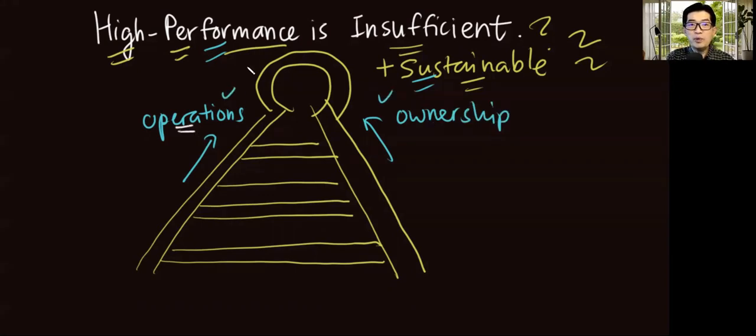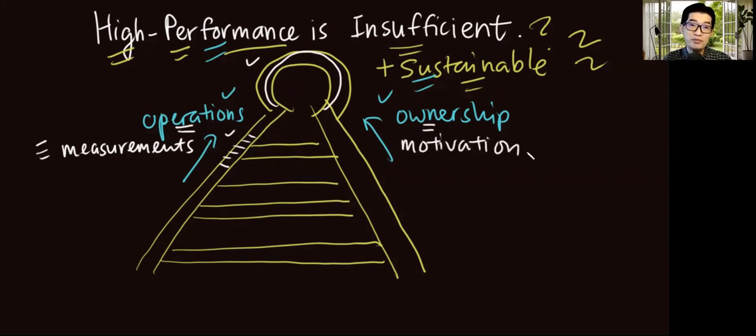In the operational track, we want to achieve high performance by focusing on measurements. That's why we set KPI. That's why we set performance indicators, because we want to measure how far along we have come in the process towards achieving our performance goal. However, in ownership, not only is measurement important, we also look at motivation.